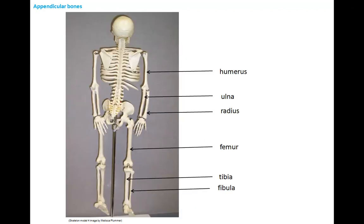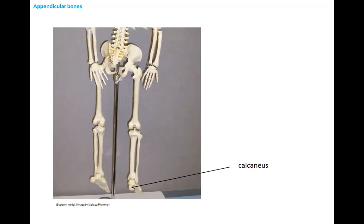In this view of the skeletal model, the bones identified are the humerus and the two lower arm bones, the ulna and the radius. The ulna bone lines up with your pinky finger, and the radius aligns on the side of your arm with your thumb. Here's the thigh bone, the femur, and the lower leg bones — the tibia, which bears your body's weight, and the fibula, which functions in stabilizing the lower leg. Last, we identify the calcaneus, your heel bone.